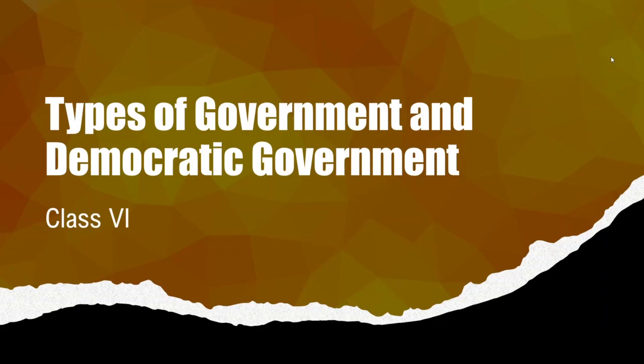In this session, we will be talking about the types of democracy — types of democratic forms of government — where we will cover parliamentary form of government and presidential form of government. Further, we will talk about universal adult franchise, the salient features of democracy, and public opinion. Let's get started.